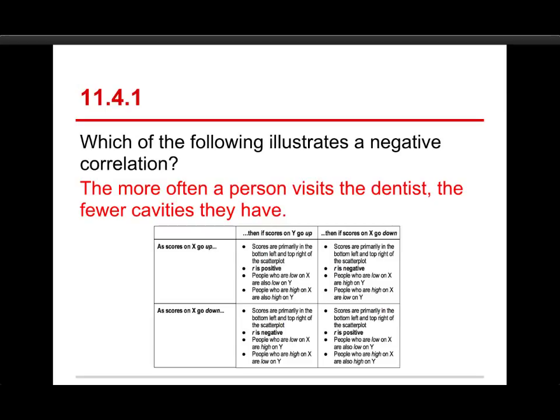So anyhow, the idea here is when you have more of one, it means more of the other, that's positive. It can also be phrased as less of one, less of the other is positive. More of one, less of the other is negative and that's what we were looking for here. Alright, second one.